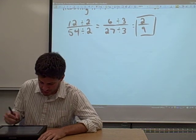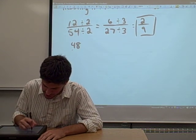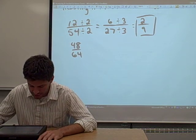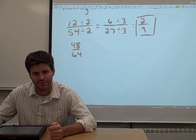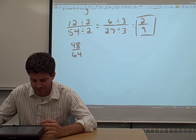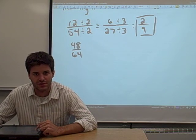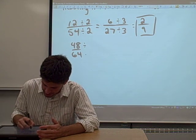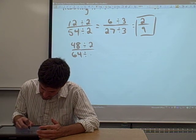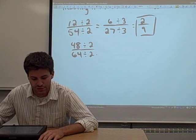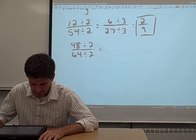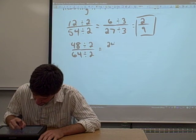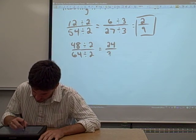So let's try another one here. 48 over 64, for example. What we can do is we can look at that for a little while and we can pick a number that divides evenly into 48 and 64. Whatever number you want. I'm going to choose 2 because it's small and it should be pretty easy to do the division. Divide 48 by 2 and what you get is 24. Divide 64 by 2 and what you get is 32.